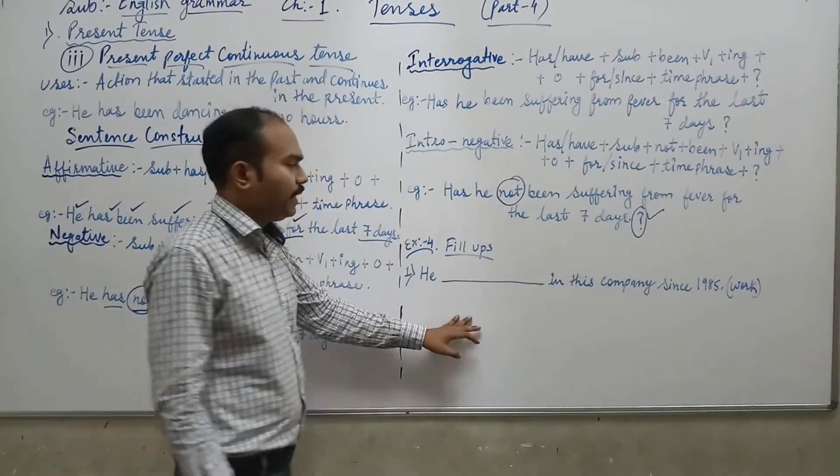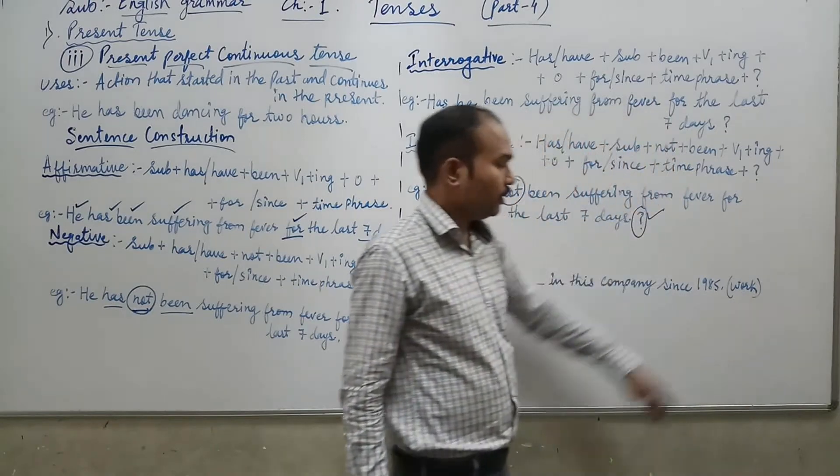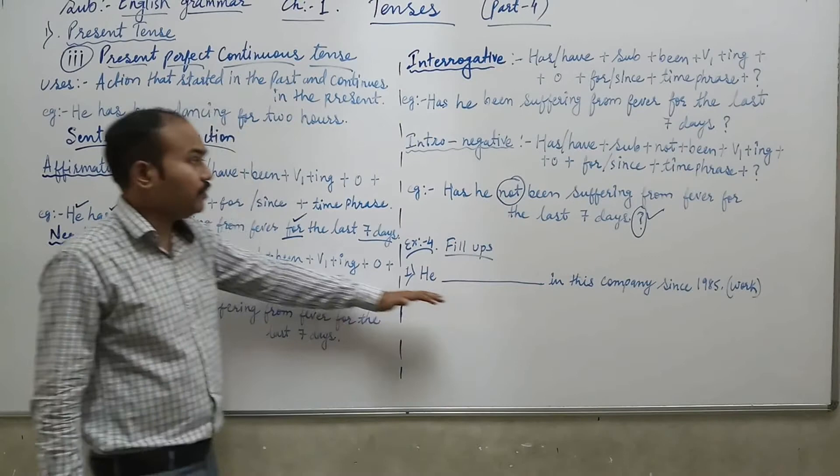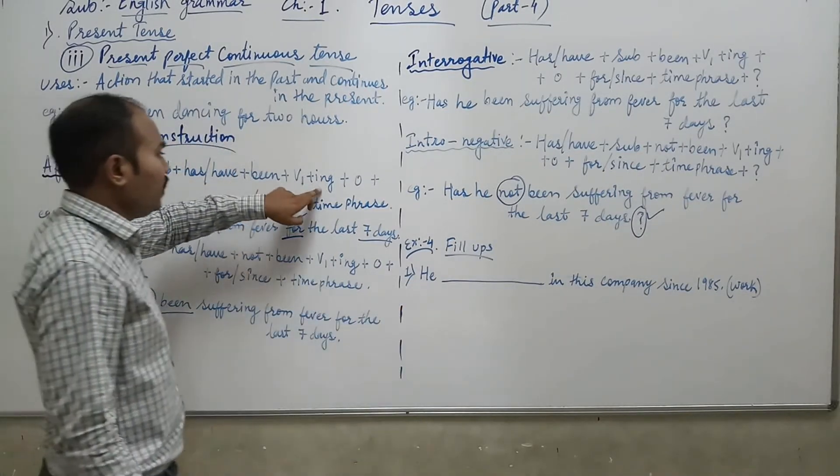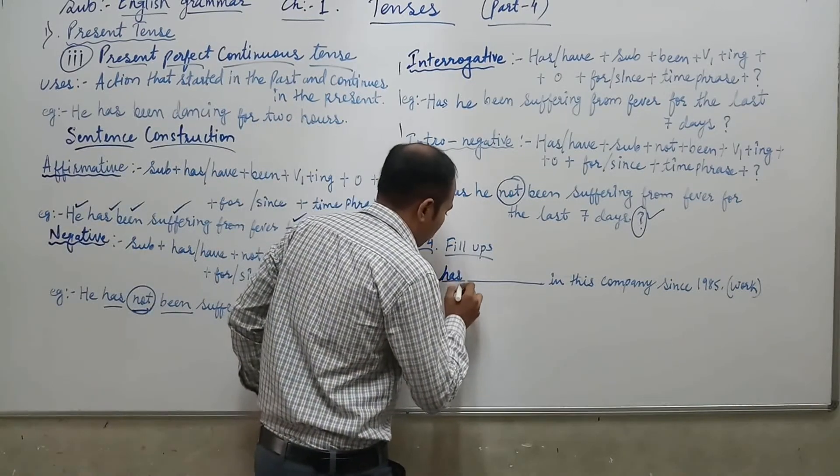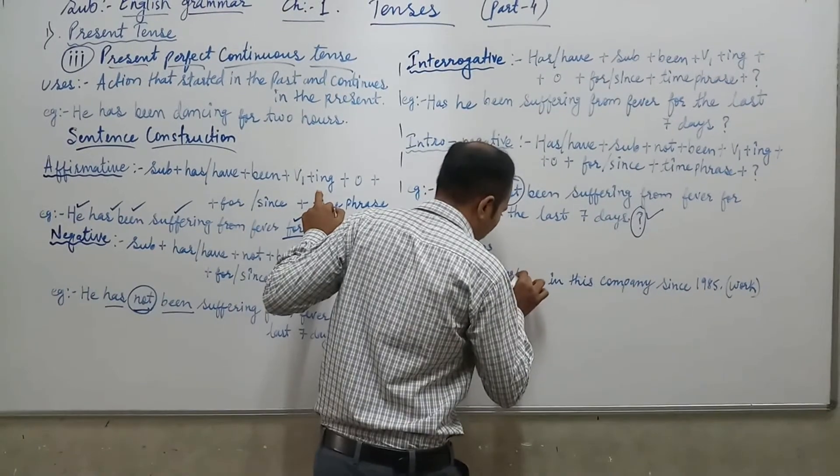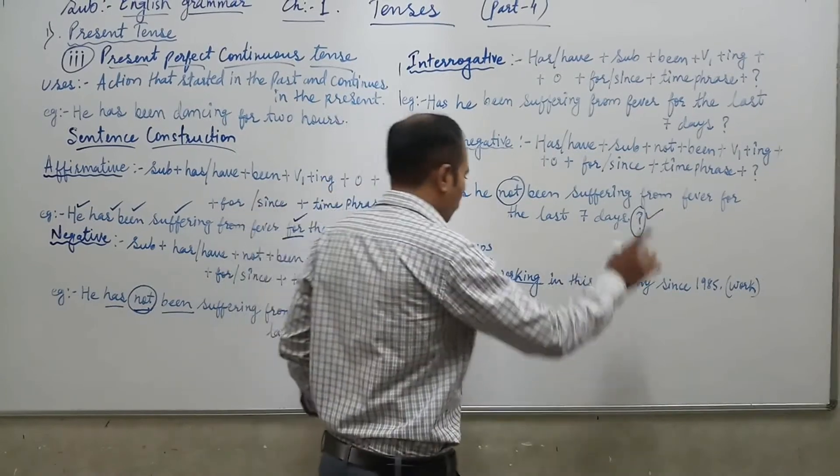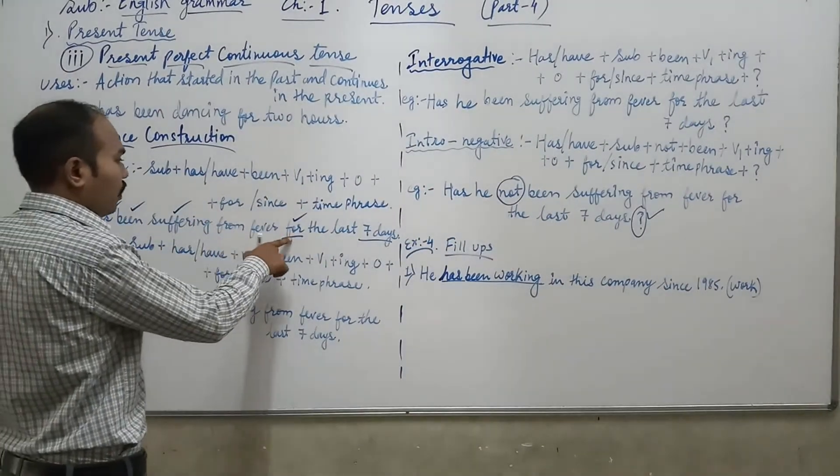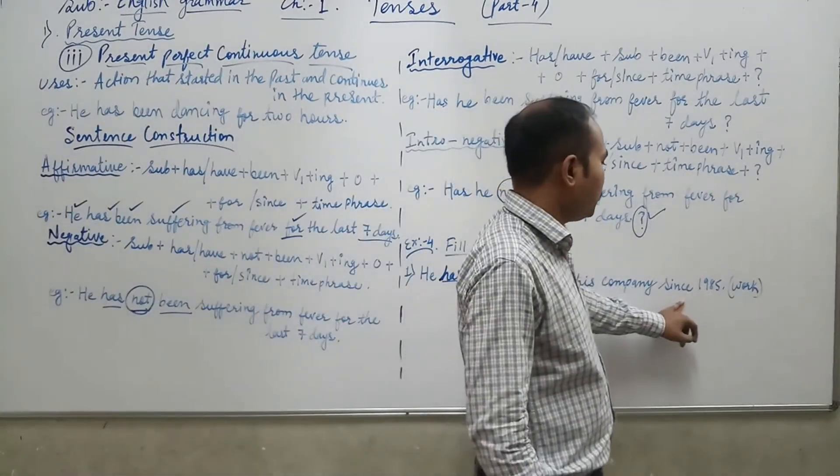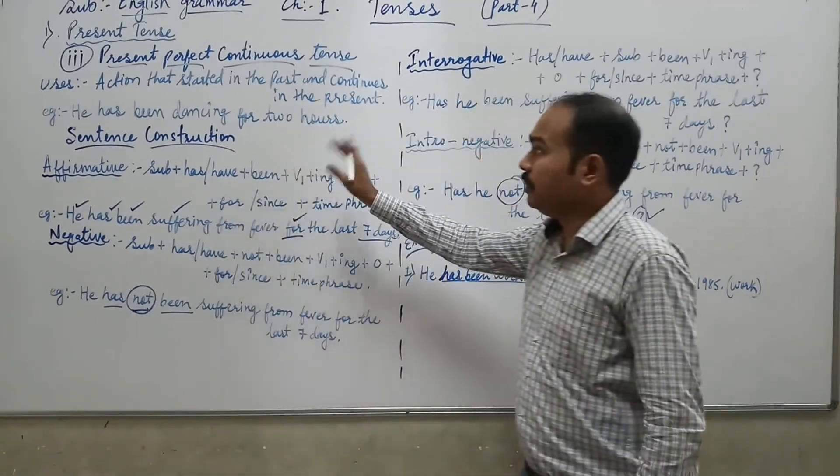Now, he left his company since 1985. Work the word, work, use. Affirmative, present perfect continuous. Subject, has been, been, working. And the other words are remaining words. So he has been working in this company since 1985. See here, for seven days, since 1985, so we use since.